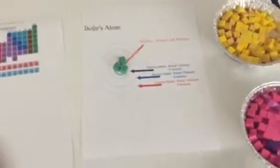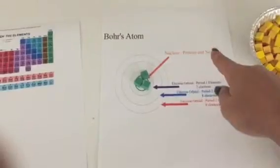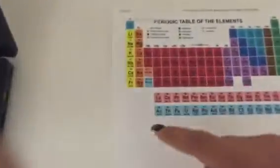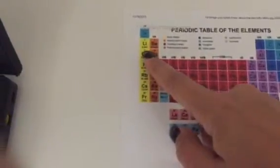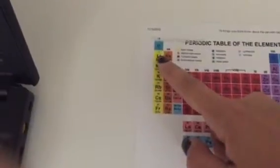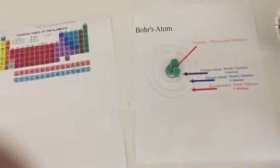Secondly, to find out the number of neutrons, we have to subtract our atomic mass of 7 from our atomic number of 3. So 7 minus 3 is 4. So 4 neutrons also go in the nucleus of our atom.